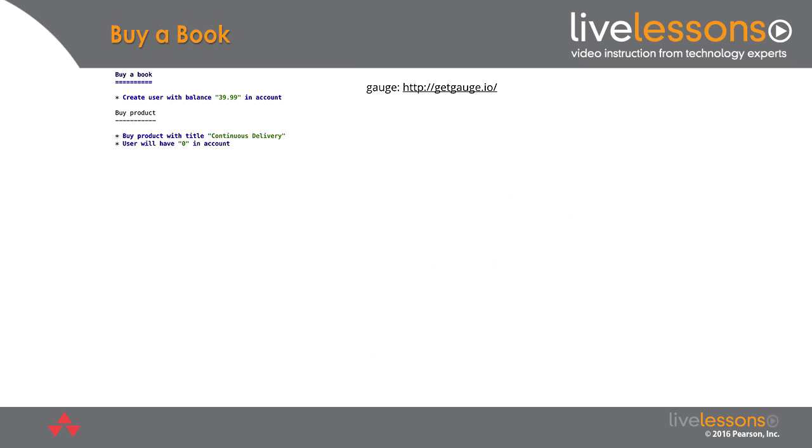And I'm going to show you a relatively new open source tool right now called Gauge. Gauge is a tool that lets you write scenarios in plain text in markdown format. What you can see here is a scenario I wrote just for this example.